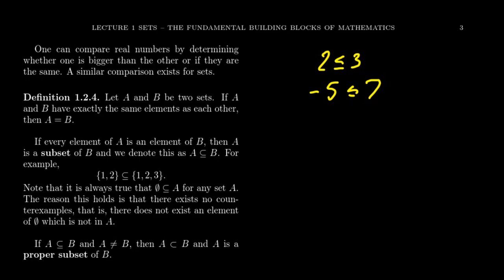We can actually define a comparison between sets that very much acts like the less than or equal to symbol we've seen already. And this is going to come into play as we talk about subsets. So imagine we have two sets A and B. We say that two sets A and B are equal to each other if A and B have exactly the same elements as each other.